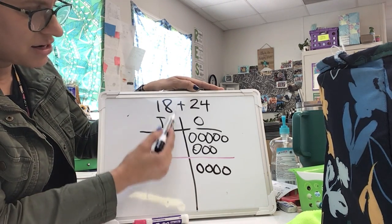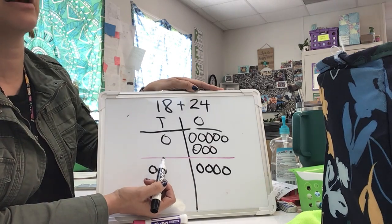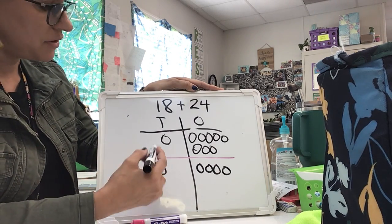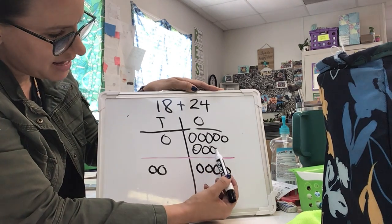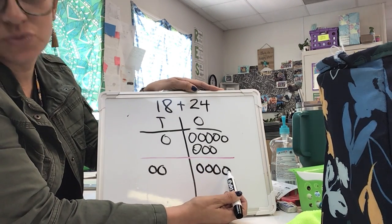So I have 18 and 24, and I put them on my place value chart. The next thing I'm going to do in my steps is I'm going to count how many ones that I have. So I know this is 5, 6, 7, 8, 9, 10, 11, and 12.